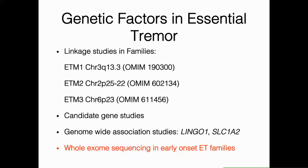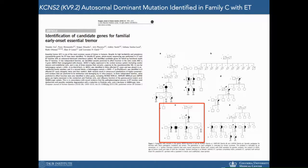In terms of genetic factors, both family studies and twin studies provide strong evidence for a genetic contribution to essential tremor. There have been a number of approaches in the last decade to identify genes, including linkage studies, which have led to the identification of three loci, candidate gene studies, and genome-wide association studies, which have identified risk factors in the LINGO1 and SLC1A2 genes. More recently, we and others have used whole exome sequencing in early onset essential tremor families, including a study of 37 families with an autosomal dominant mode of inheritance.